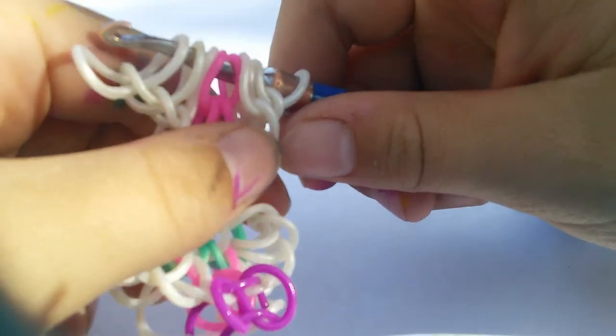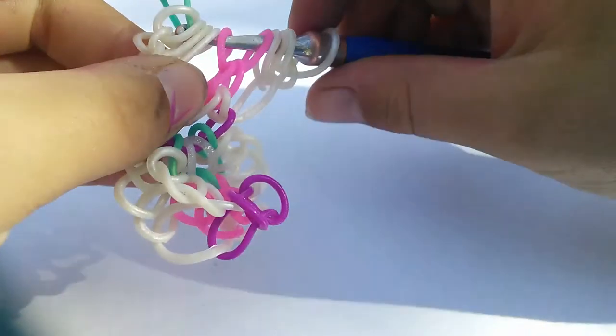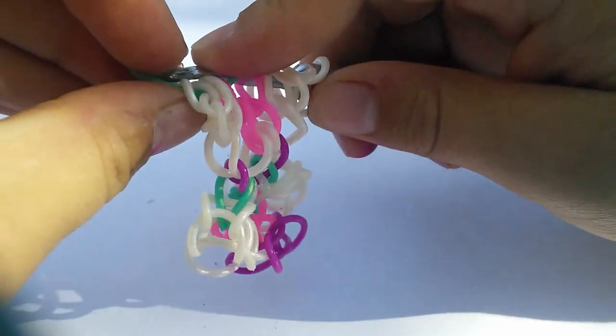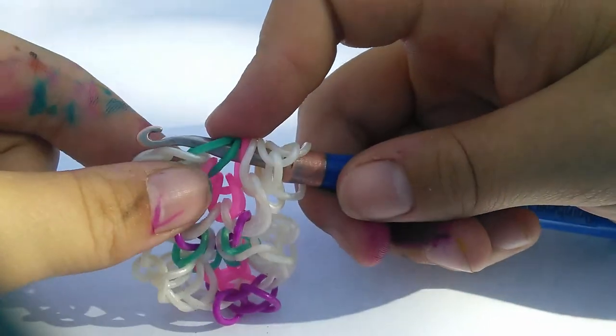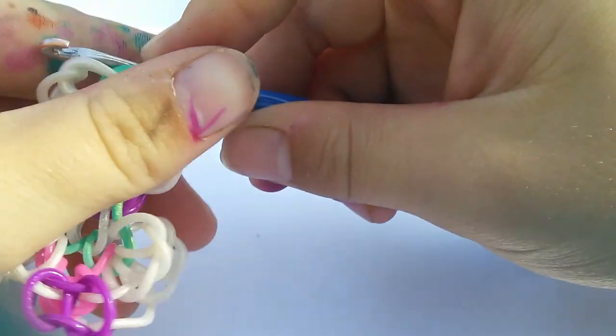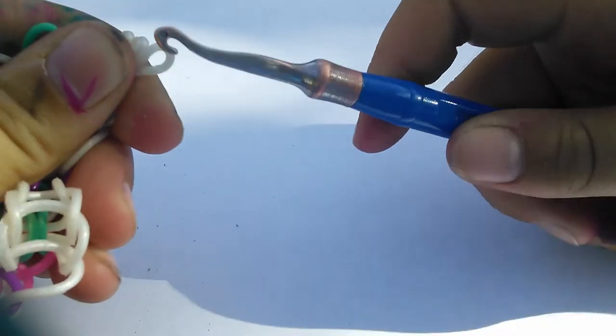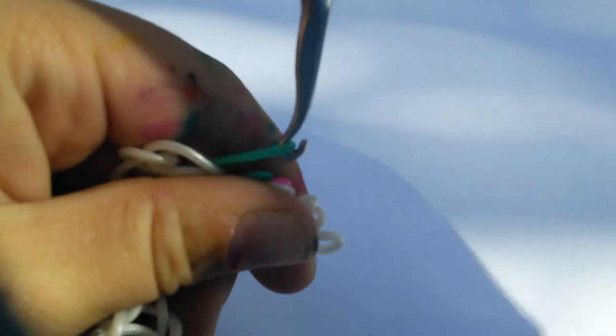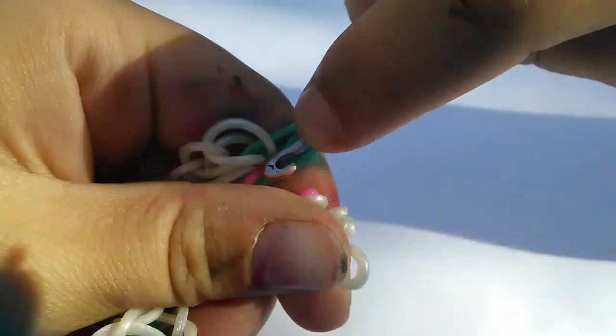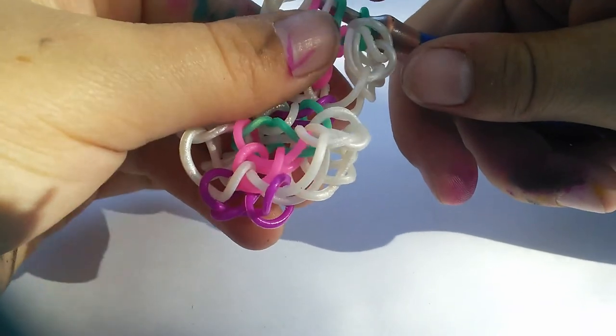If you have that get your green rubber band and loop all of the white rubber bands on one side plus the first pink rubber band like this. Pinch all your rubber bands together and put them on in reverse order so that you get this.